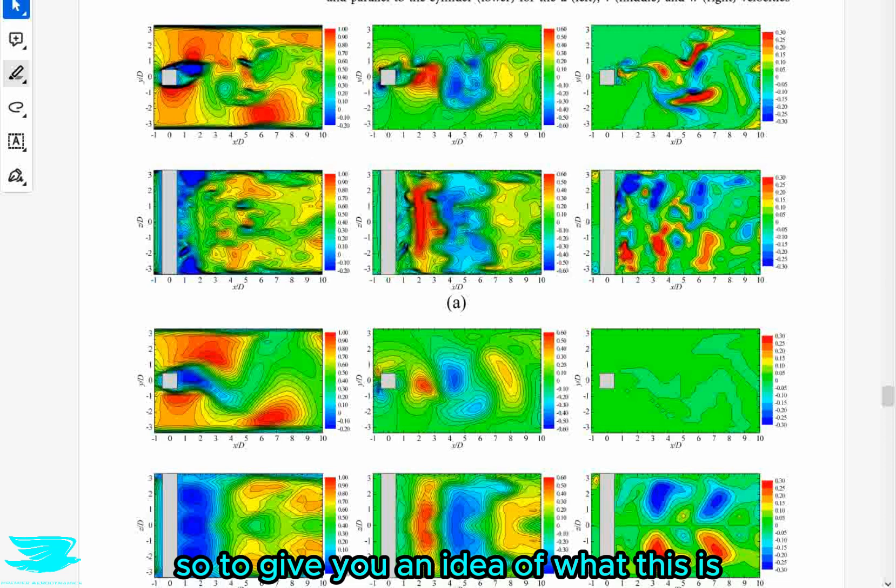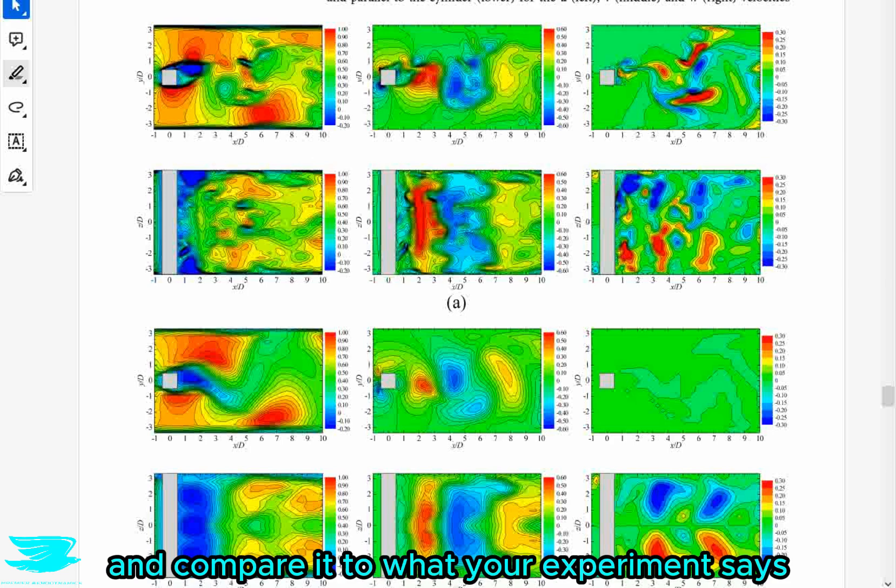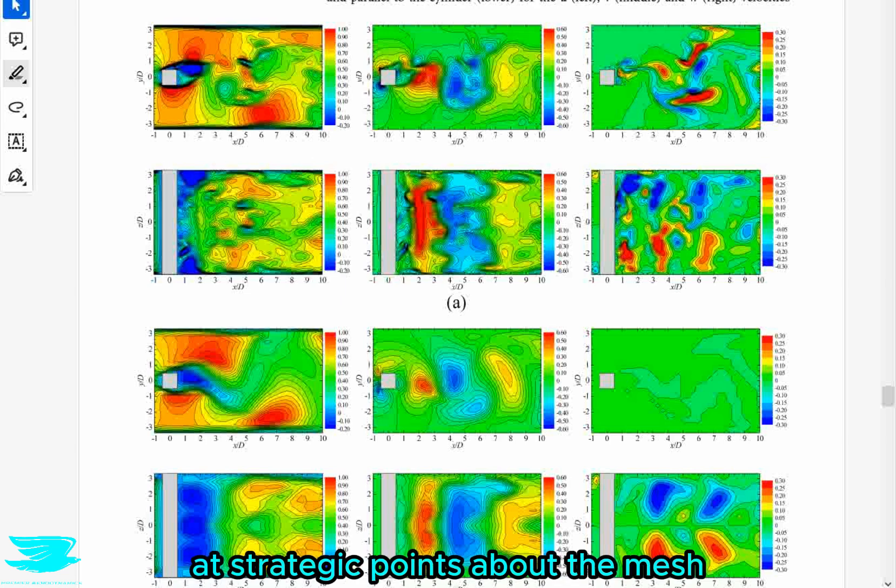So to give you an idea of what this is, imagine you have your CFD model. It can be whatever you like, doesn't really matter. Now you have your mesh and you start to solve, but every iteration or so, you then check the flow fields and compare it to what your experiments say it should be.